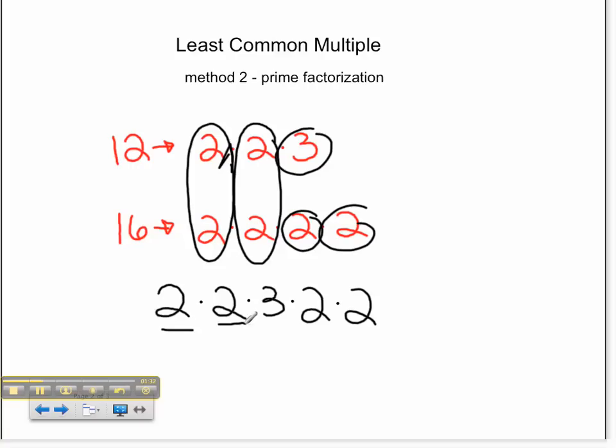2 times 2 is 4. Times 3 is 12. 12 times 2 is 24. Times 2 is 48. Our LCM, once again, is 48.